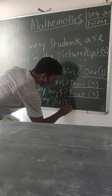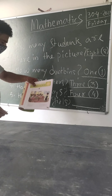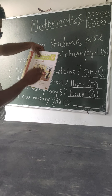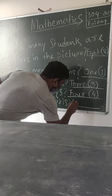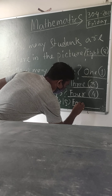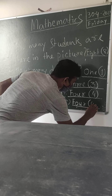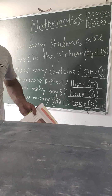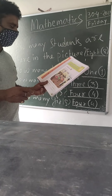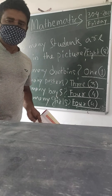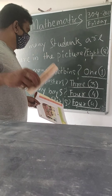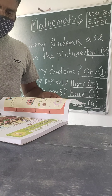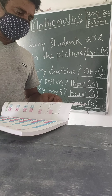The fifth and last question is: how many girls are there? Same way, count — one, two, three, four. So there are four girls. Write the answer as 'four', spelled F-O-U-R. This completes the first page. In the exam they may ask the same type of questions with different pictures.